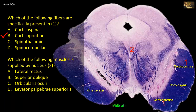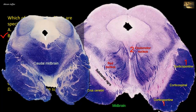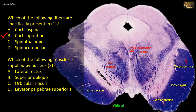In the second part of the question, which muscle is supplied by the nucleus in label 2? Is it the lateral rectus, superior oblique, orbicularis oculi, or levator palpebrae superioris? This section of the midbrain also shows the red nucleus in the tegmentum, indicating it is at the level of the rostral midbrain. At this level, the anterior part of the periaqueductal gray matter contains the oculomotor nucleus. The oculomotor nucleus supplies orbital muscles except the lateral rectus, which is supplied by the abducent nerve, and except the superior oblique, which is supplied by the trochlear nerve.